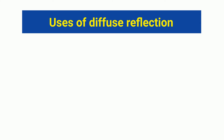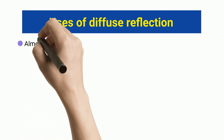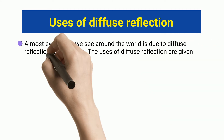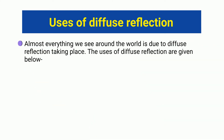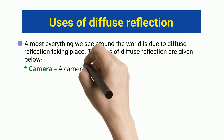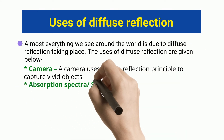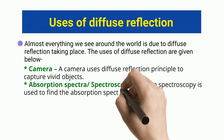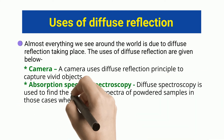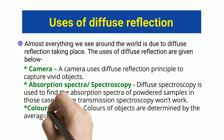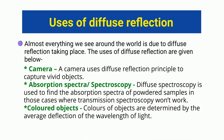Uses of diffuse reflection: almost everything we see around the world is due to diffuse reflection taking place. Camera: a camera uses the diffuse reflection principle to capture vivid objects. Absorption spectra and spectroscopy: diffuse spectroscopy is used to find the absorption spectra of powdered samples in cases where transmission spectroscopy won't work. Colored objects: colors of objects are determined by the average deflection of the wavelength of light.